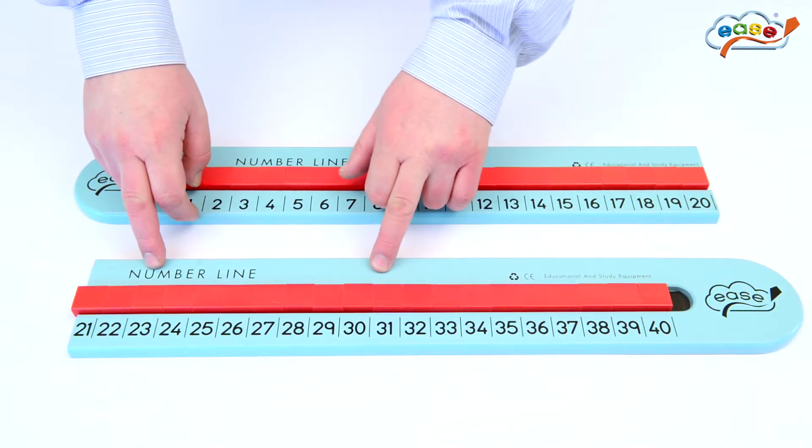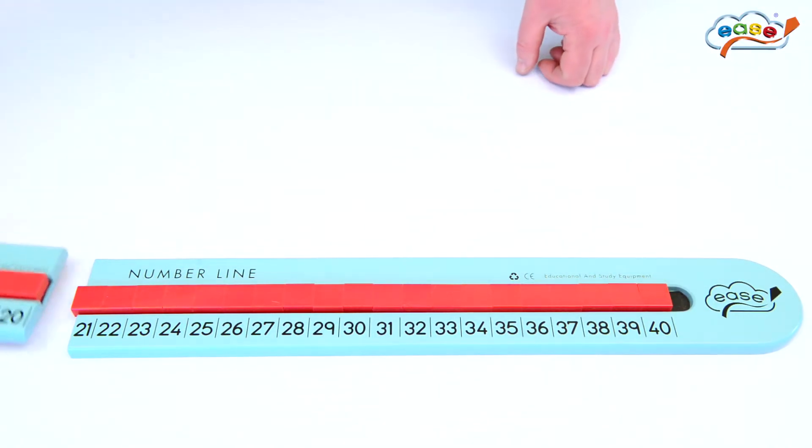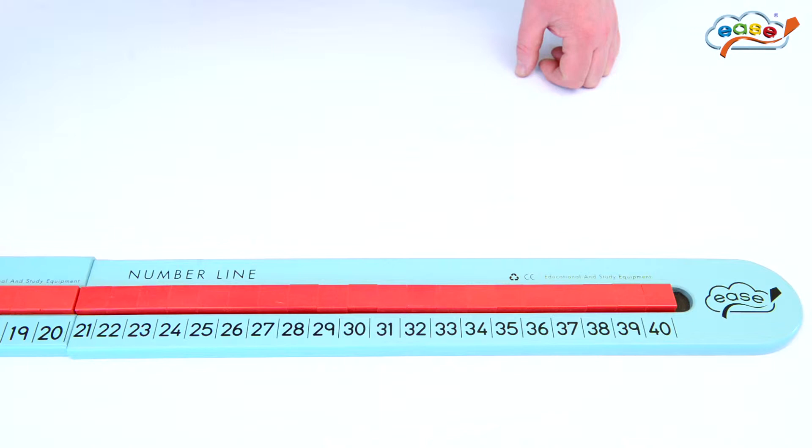Now we have the Ye's number line from 21 to 40. This is simply an extension of the number line and can be used in conjunction with the number line 1 to 20, where the child can start to progress with numbers up as far as 40.